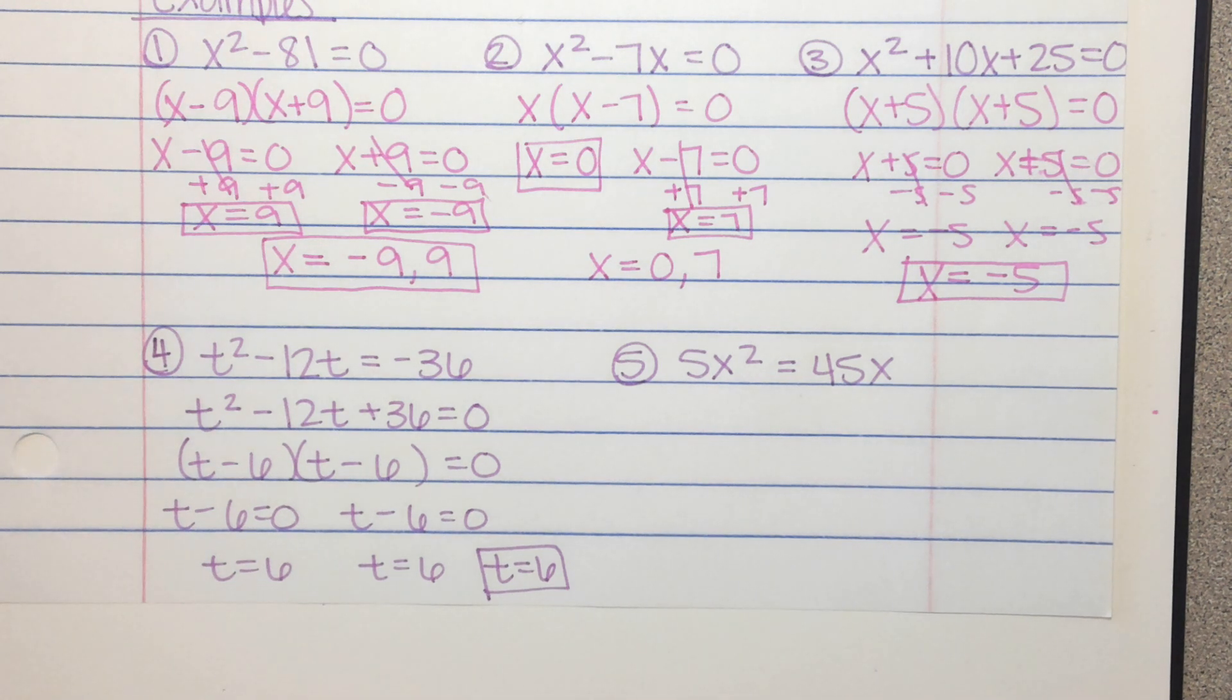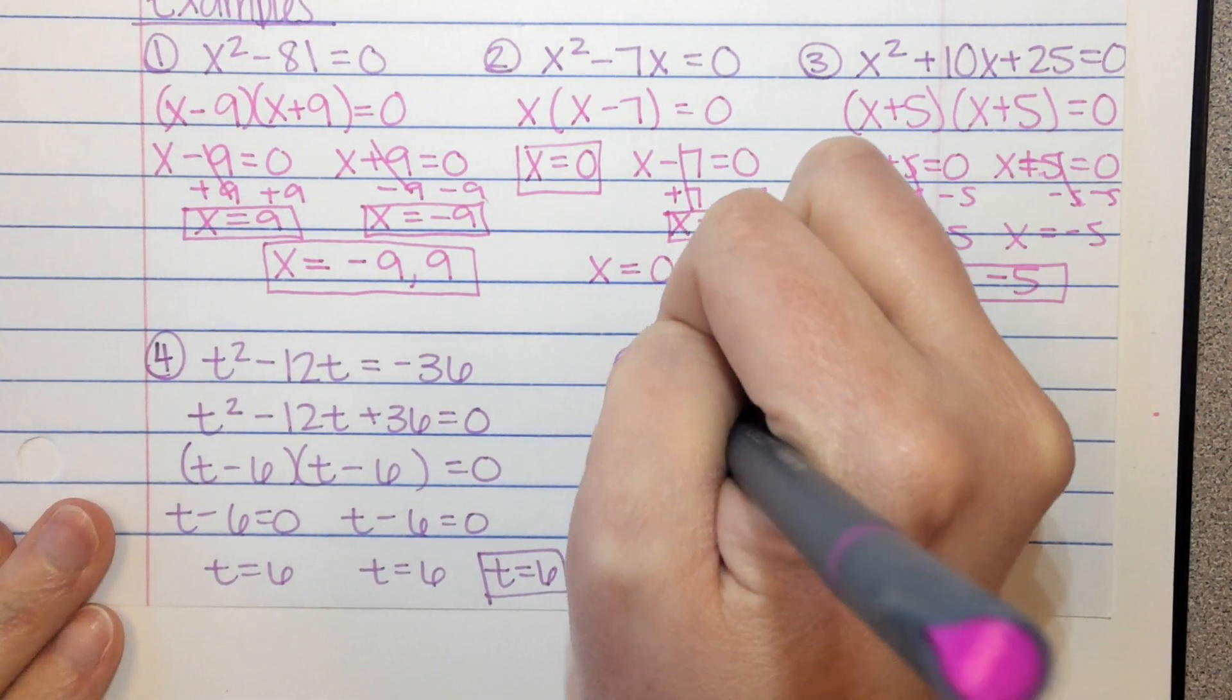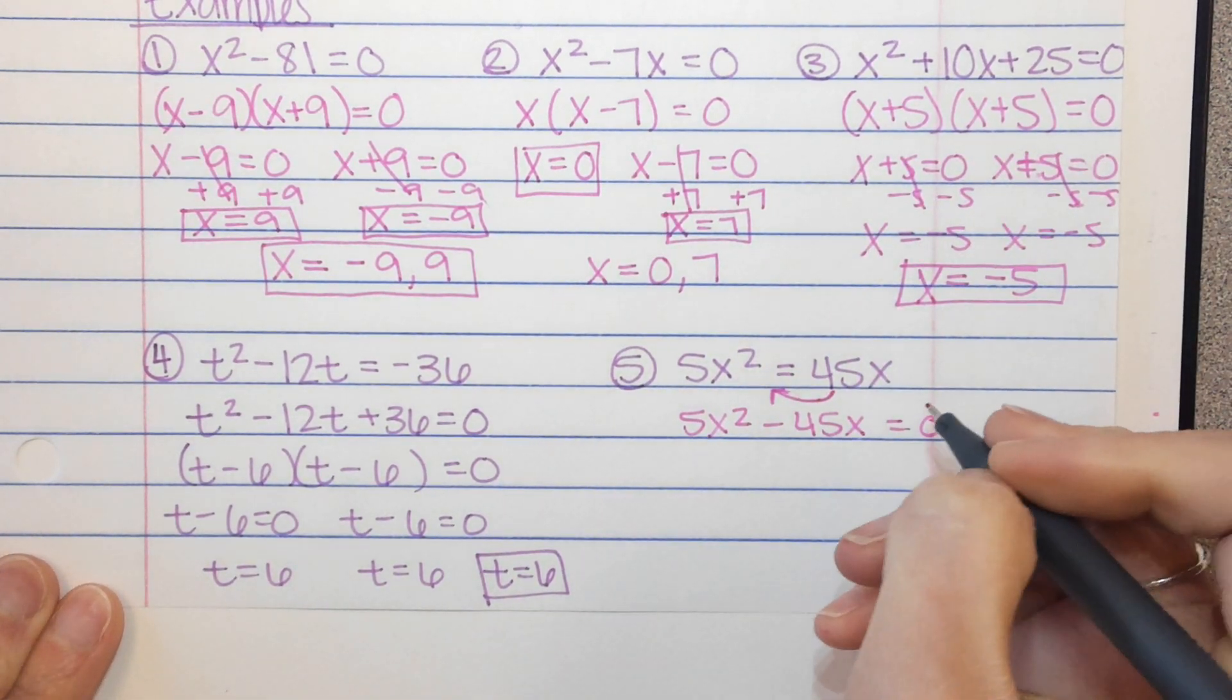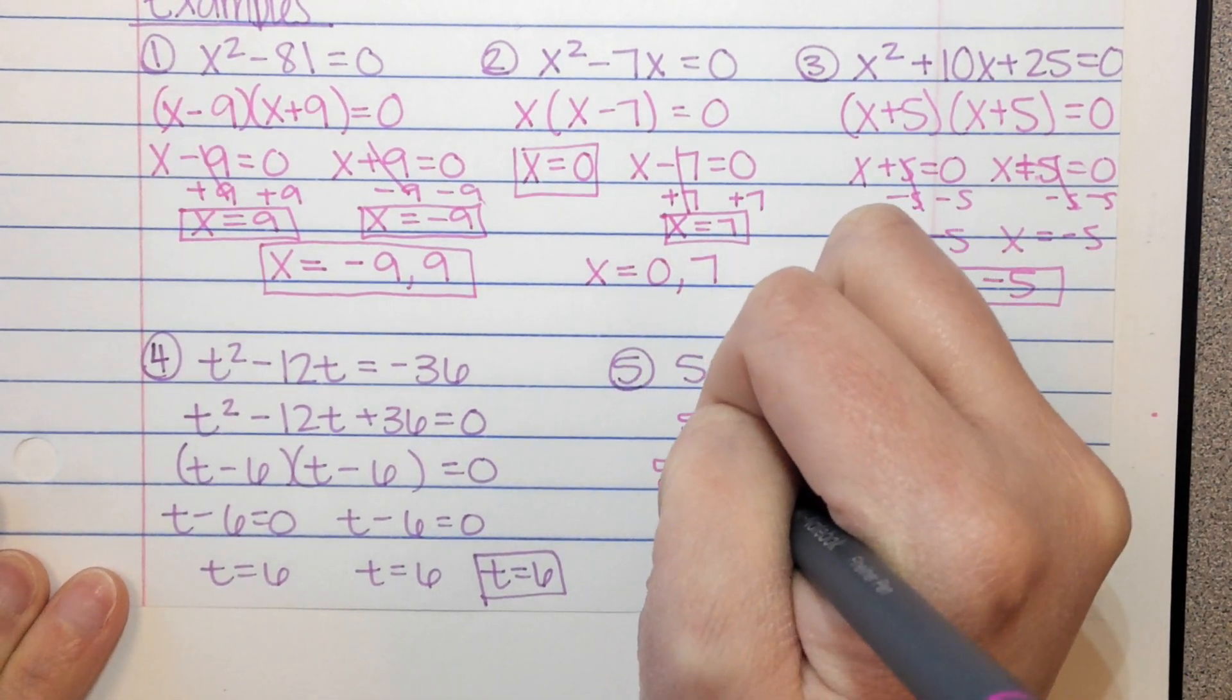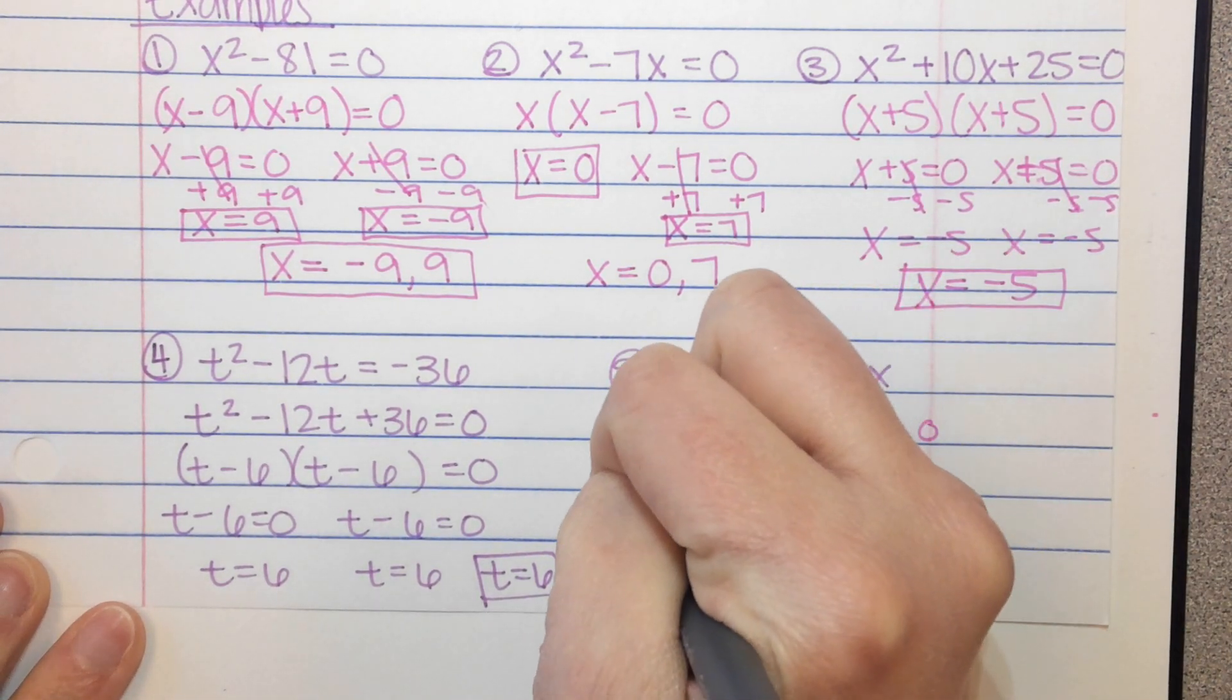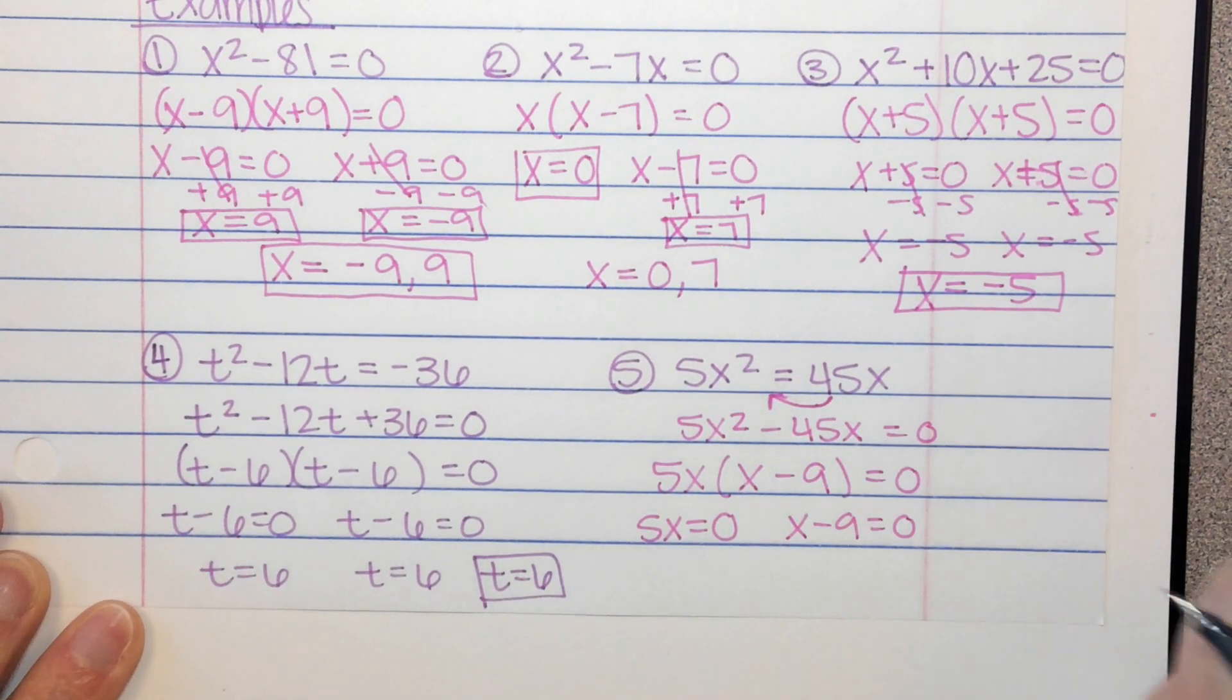Here's number 5. We have 5x squared equals 45x. We can't do anything with it yet. We have to set it equal to 0, so we're going to move that to the other side. 5x squared minus 45x equals 0. We factor out the GCF, so we bring out a 5x, and that leaves us with x minus 9 equals 0. Set each of those factors equal to 0. 5x equals 0. x minus 9 equals 0 and solve.